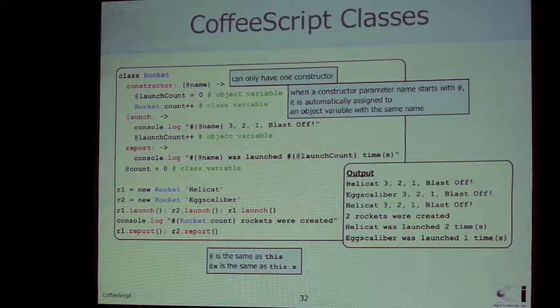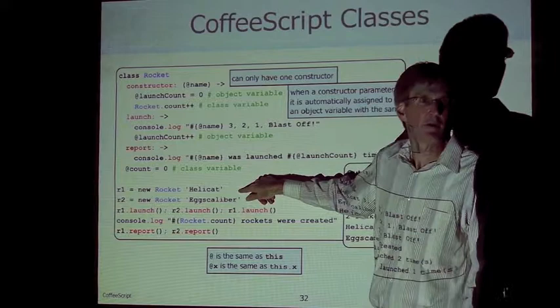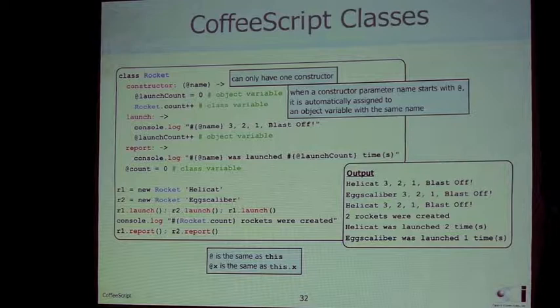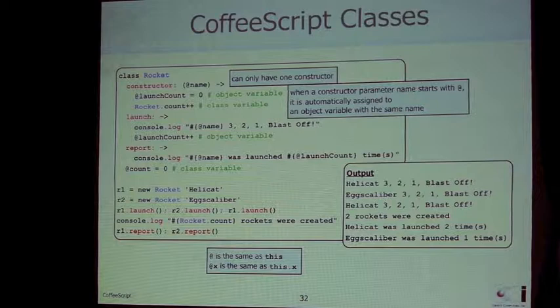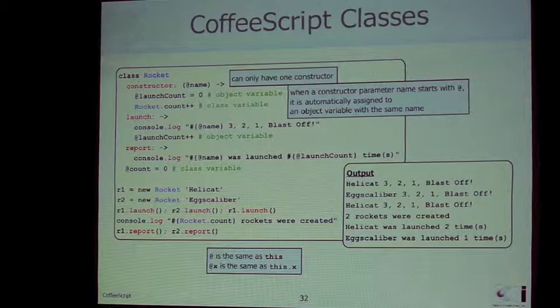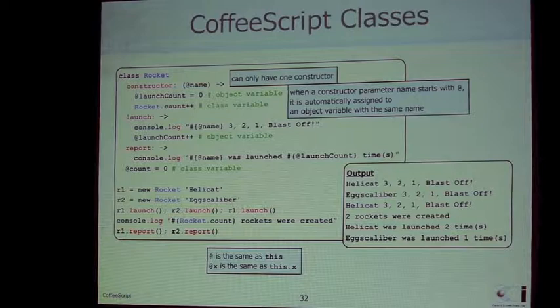You could implement a registry inside the constructor — a map keyed by name so you could look up any rocket object by name using something like Rocket['name'].launch(). There's also built-in support for namespaces in CoffeeScript, though that's not documented on the main CoffeeScript overview page — you need to go to the Wiki on GitHub to find it.